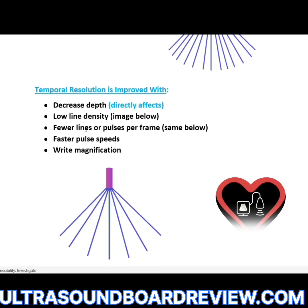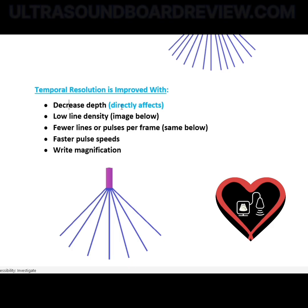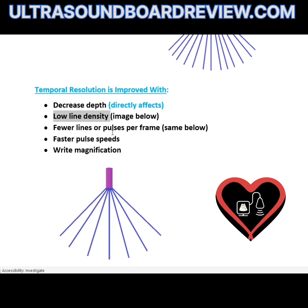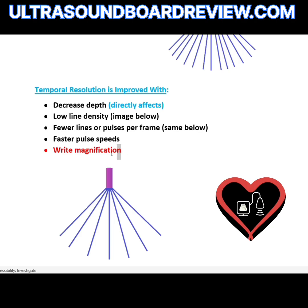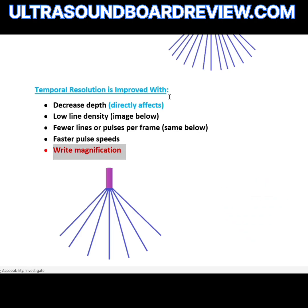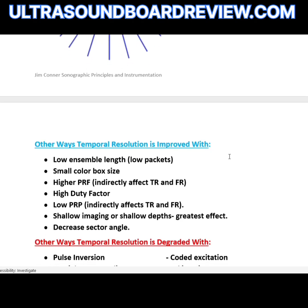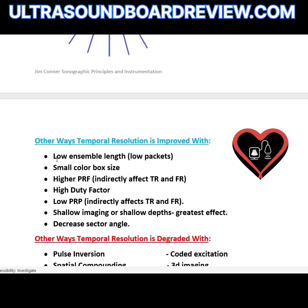Things that improve temporal resolution include: decreasing depth (which directly affects it), low line density, fewer lines or pulses per frame, faster pulse speeds, and right magnification — make sure you remember that right magnification will actually improve temporal resolution. Additional improvements include a low ensemble length or low packets, small color box size, and higher PRF, which indirectly affects temporal resolution and frame rate.